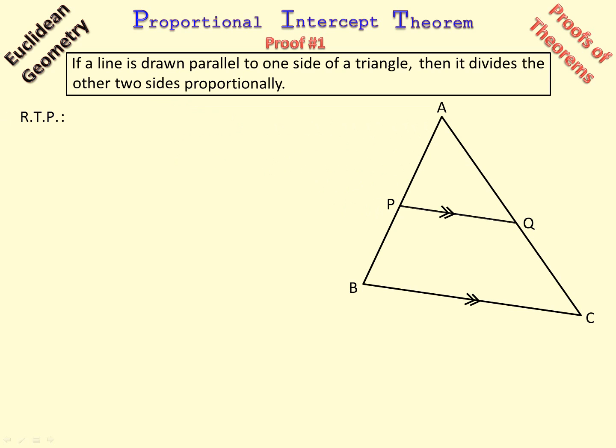So we go straight into required to prove, RTP. And we are required to prove that this divides that proportionally. Required to prove in a theorem proof interpreted according to the diagram we are doing. So it is not going to write a line drawn parallel to one side divide the other two sides proportionally. It is going to write AP over PB equals AQ over QC, interpreted by the figure.